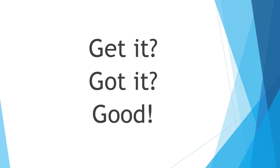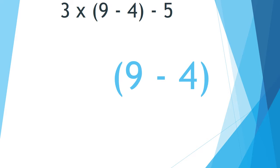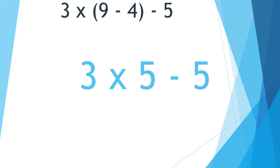Get it? Got it? Good! Let's try another problem: three times, open parentheses, nine minus four, close parentheses, minus five. Again, we need to go through the order of operations. First, we look for parentheses. The problem in parentheses is nine minus four. What is nine minus four? Think time! If you said five, you're awesome! So now we have three times five minus five.